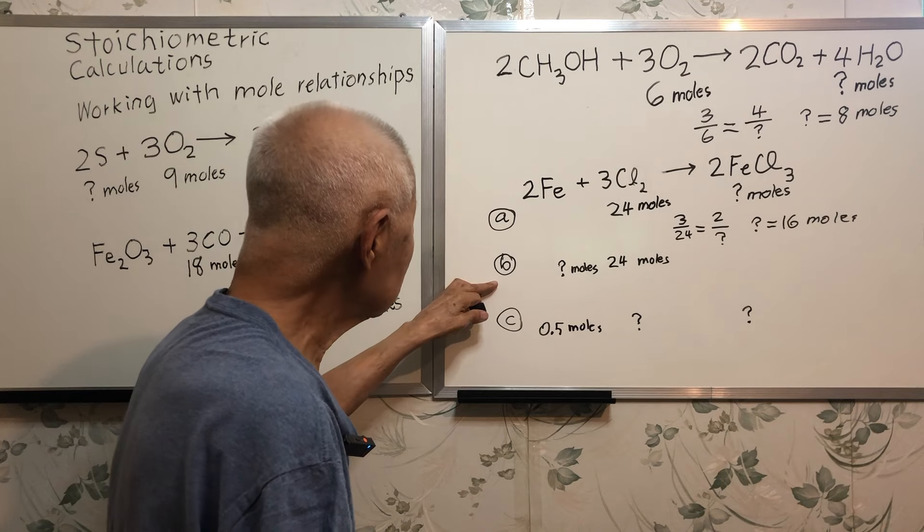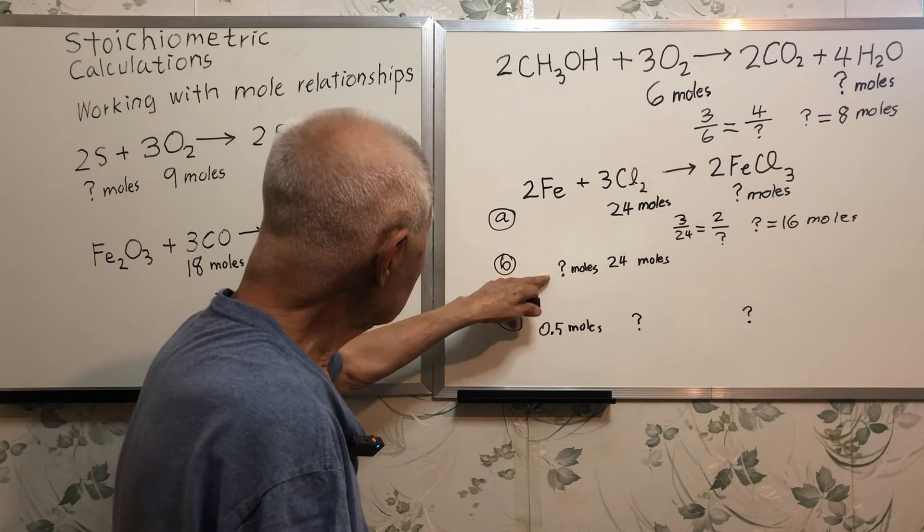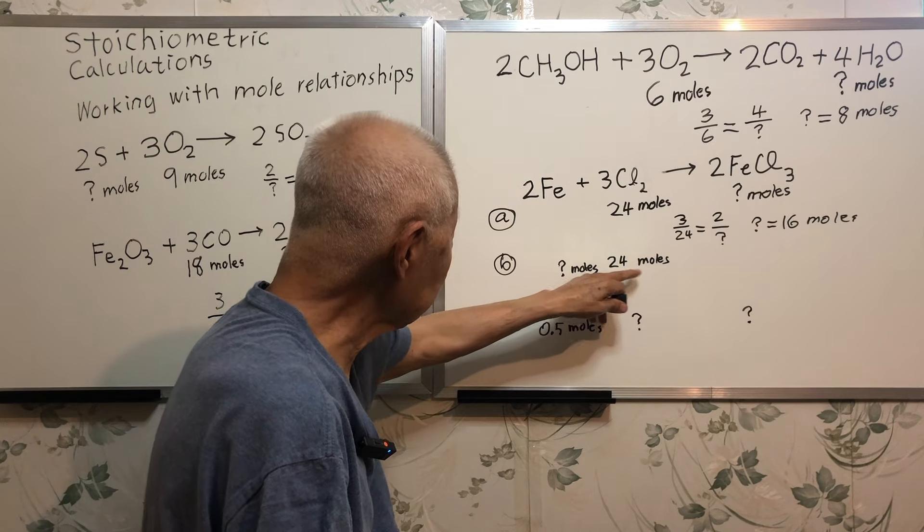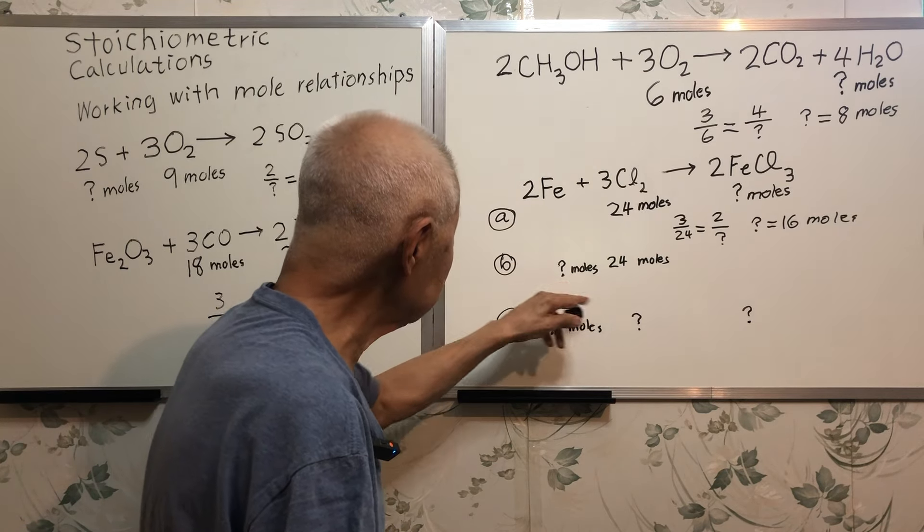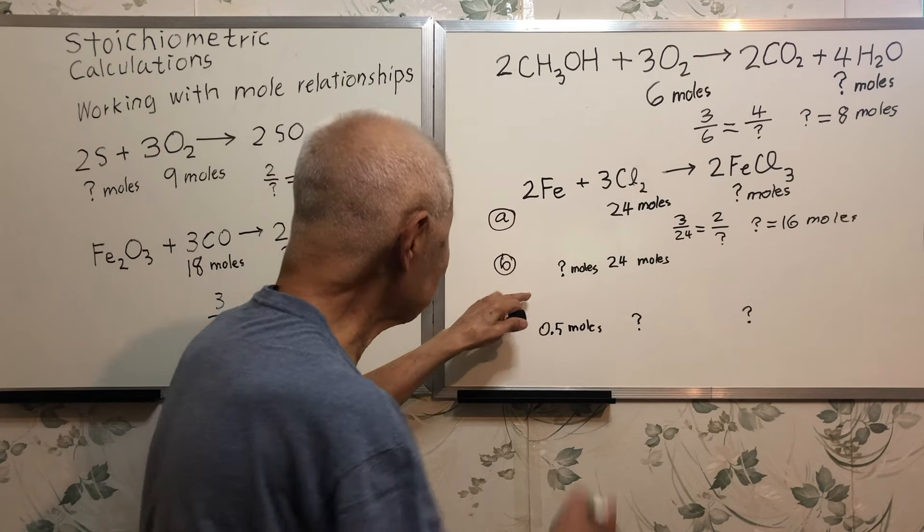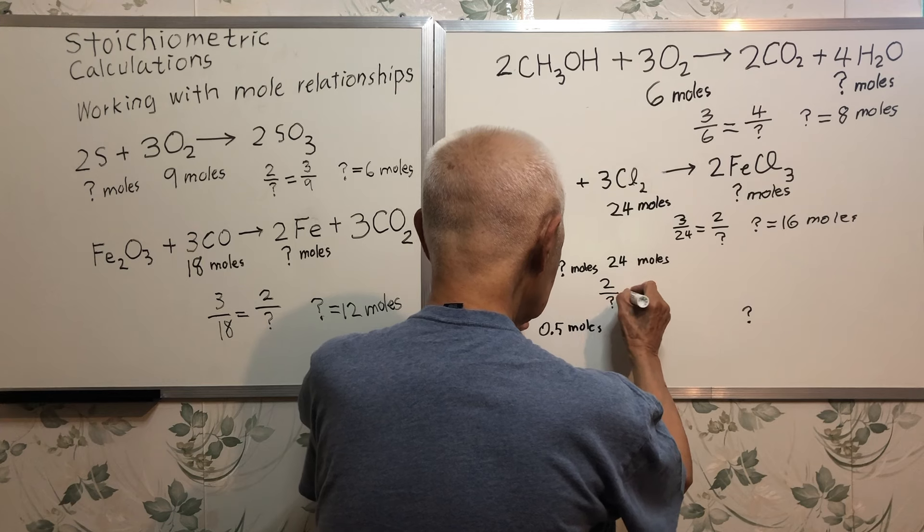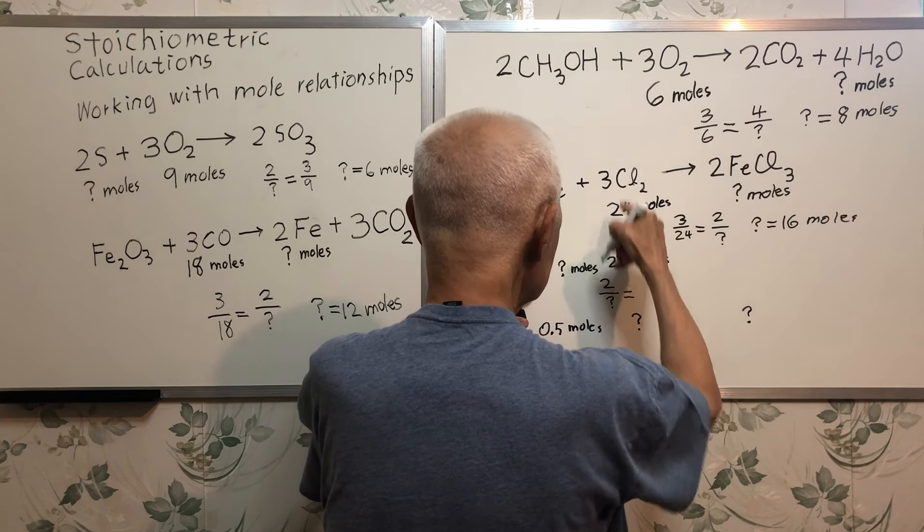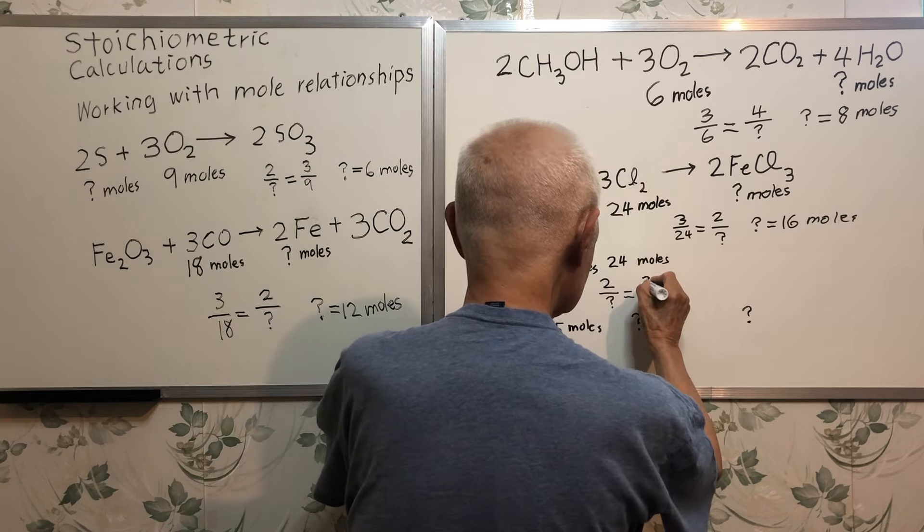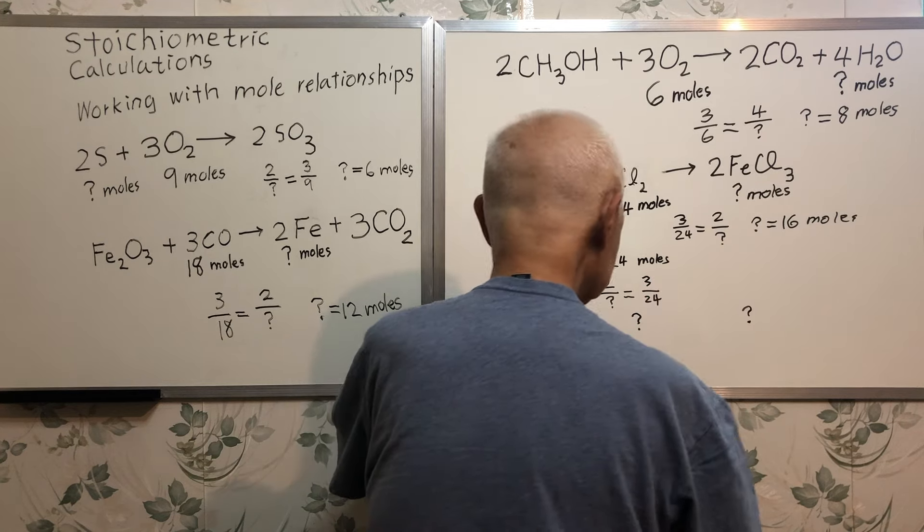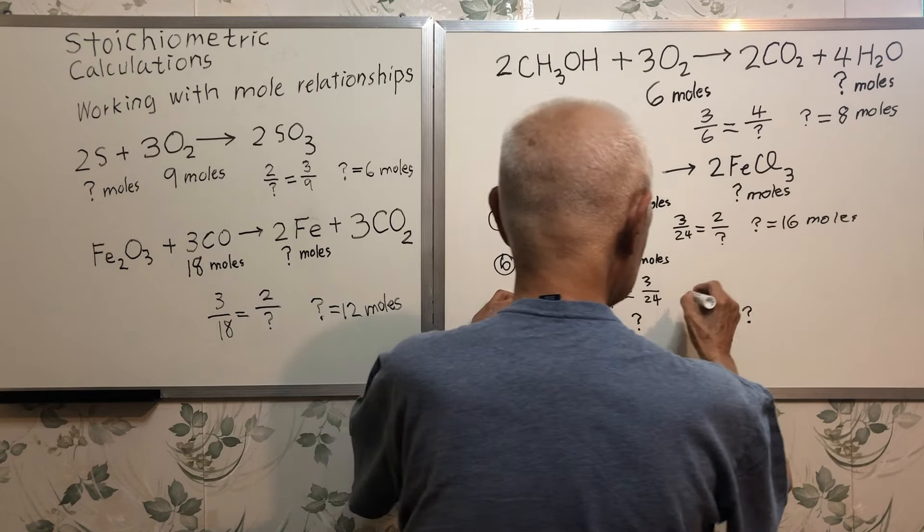Part B, how many moles of iron will react with 24 moles of chlorine? So 2 over question mark is equal to 3 over 24.